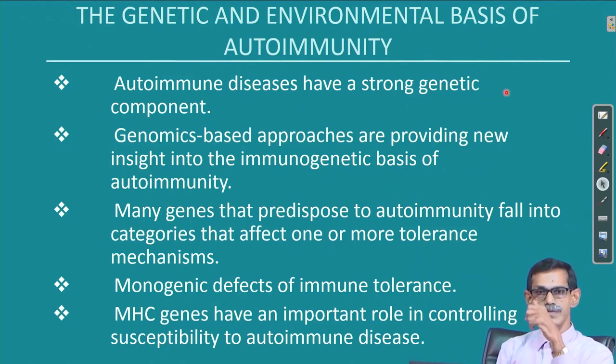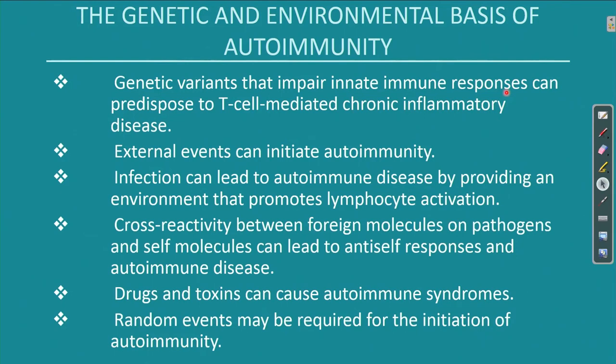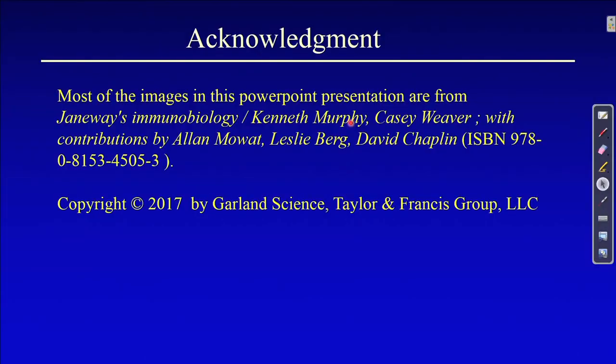The summary slide captures everything discussed so far about the genetic and environmental basis of autoimmunity. Drugs and toxins can also cause autoimmune disease — the immune system reacts against a drug, produces antibodies, and those antibodies find similarity with our own proteins. Many things remain unknown; even random events may be required to initiate autoimmunity. This is the end of the autoimmunity chapter. In the next lecture, we are going to discuss transplantation. Thank you all.